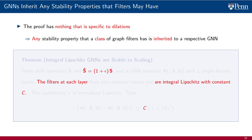Consequently, for any stability theorem we prove for a class of graph filters, we can deduce a corresponding stability theorem for GNNs that use this class in their layers. We just need to change the filter class in the theorem's statement, and replace hypotheses and theses to match the hypotheses and theses of the stability theorem for the corresponding filter class.